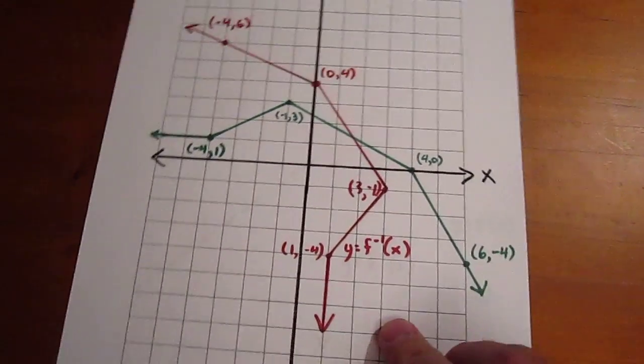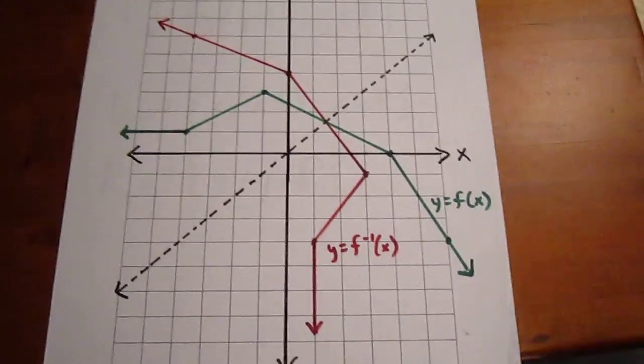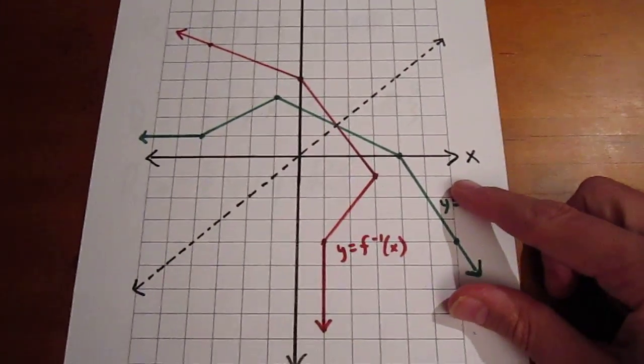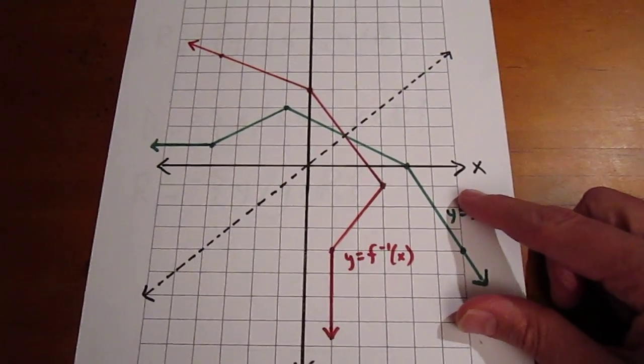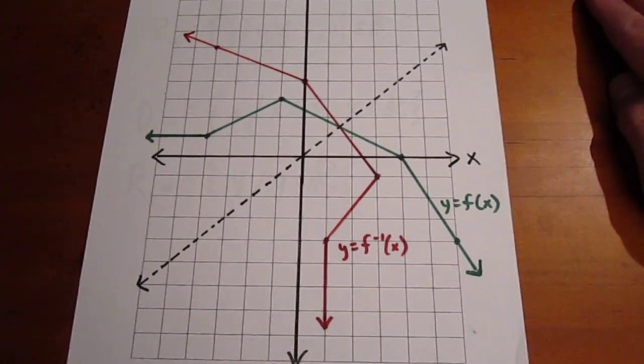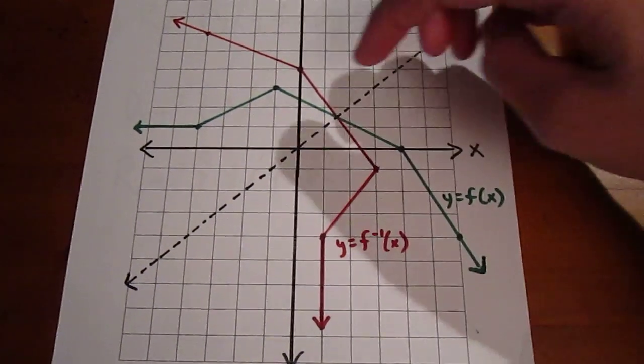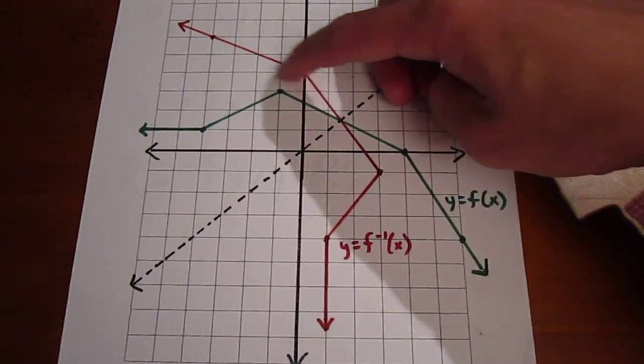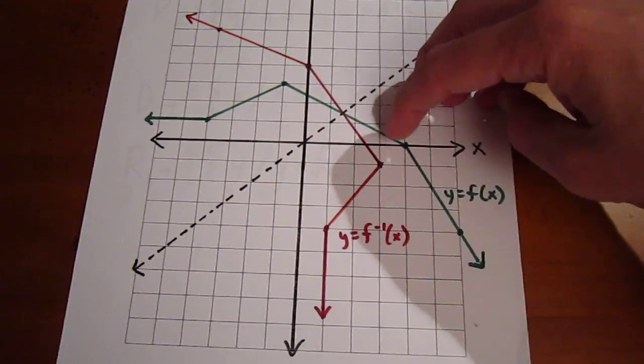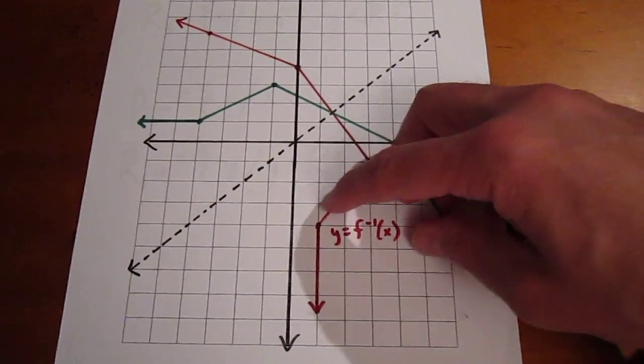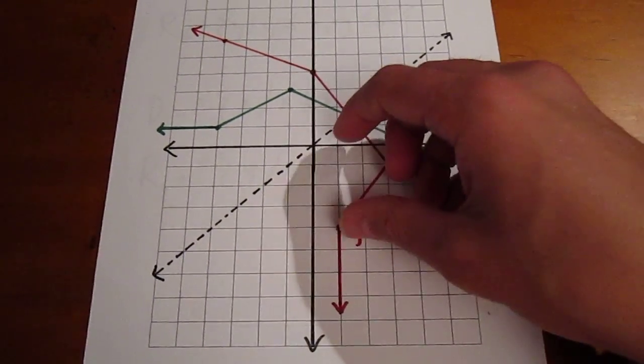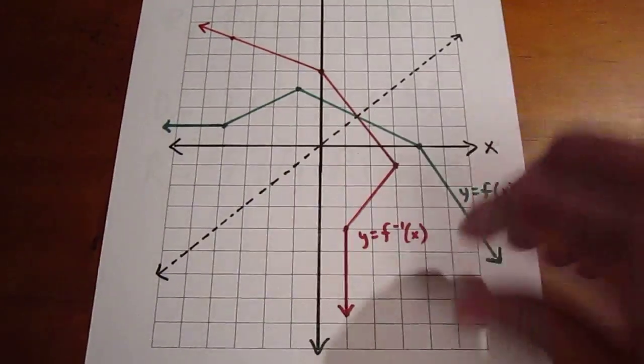And if we were to graph the line y equals x, we would see that we actually have a reflection. The red line and the green line actually are reflections of each other. And if you can focus on just this part of the red line and just this part of the green line, you might see that. Similarly, focus on just this part of the red curve and just this part of the green curve, and you can see that as well.